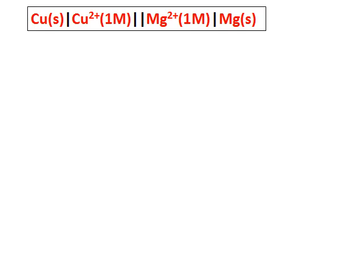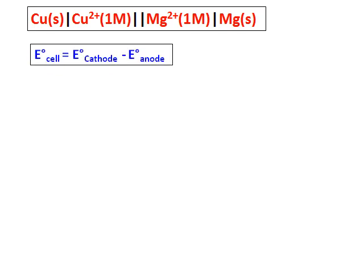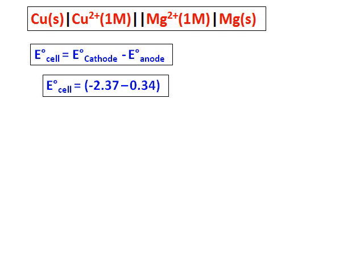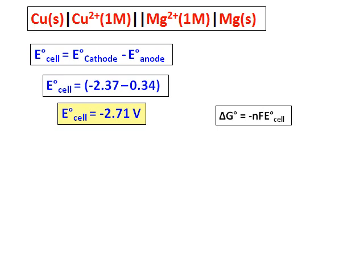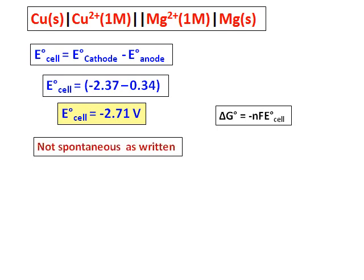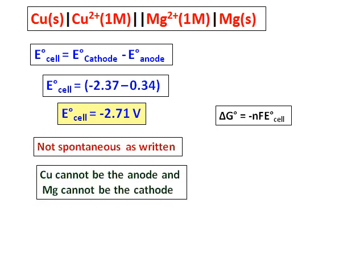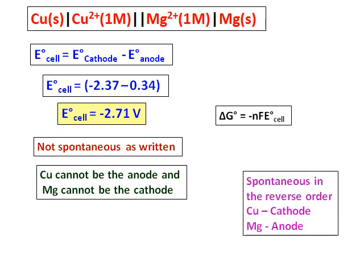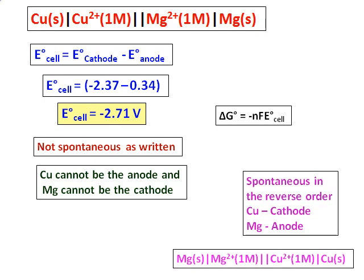For the copper and magnesium cell, E_cell = E_cathode − E_anode = −2.71 V. Since E_cell is negative, the reaction is not spontaneous as written. In other words, copper cannot be the anode and magnesium cannot be the cathode. The reaction is spontaneous in the reverse order: copper will be the cathode and magnesium will be the anode. The correct cell notation for a spontaneous reaction is: Mg | Mg²⁺ || Cu²⁺ | Cu.